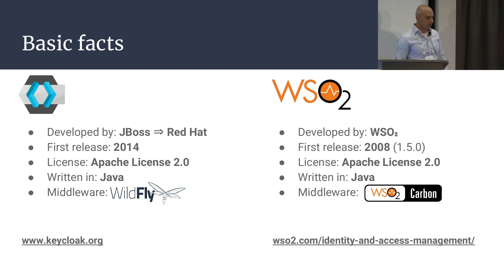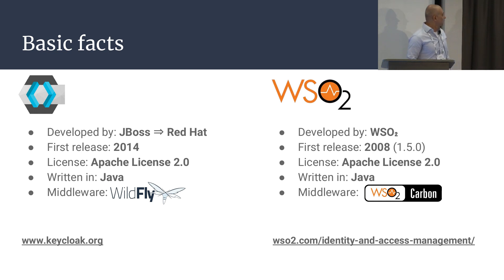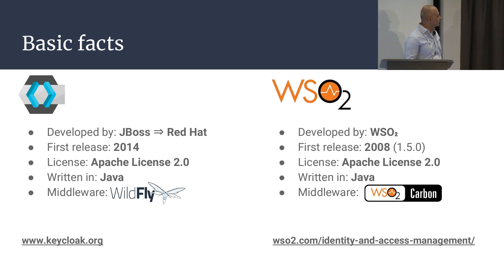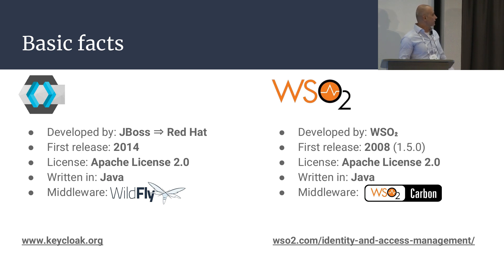Let's start with some basic information about these two products. KeyCloak is currently developed by JBoss, which is a division of Red Hat. WSO2 Identity Server is developed by WSO2. Both are American corporations. KeyCloak had its first release in 2014, which is a bit younger than WSO2 from 2008. Both are redistributed under the Apache License 2.0, which is permissive and allows for commercial use. Both are written in Java and run on middleware — Wildfly for KeyCloak, or WSO2 Carbon for the Identity Server.